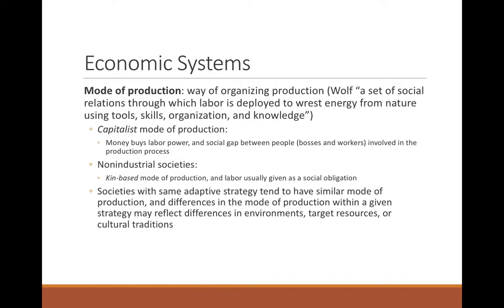To explain economic systems, we look at how the economy is organized. The mode of production is the way you organize production. Wolf defined it as a set of social relations through which labor is deployed to wrest energy from nature using tools, skills, organization, and knowledge. We identify two primary ways the economy can be organized: the capitalist mode of production, where money buys labor power and goods, creating a social gap between bosses and workers.